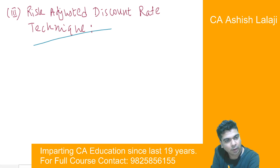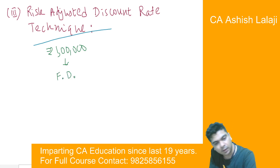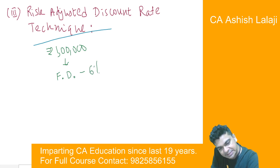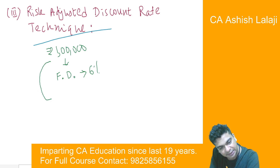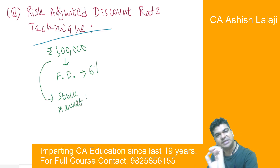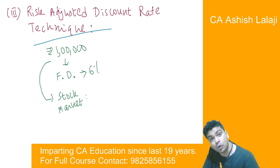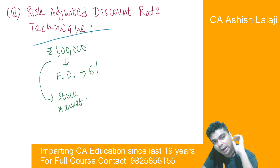Let us say you have rupees 1 lakh to invest and you are planning to put this money in a fixed deposit. If you put money in this fixed deposit, the bank is suggesting that you will get 6% interest. Another option is that this 1 lakh I can invest in the stock market — let us say I am investing in shares. If you are putting money in a fixed deposit, you will get 6% return. If you are planning to put your money in the stock market, how much return will you expect? Will you demand 6%, less than 6%, or more than 6%?